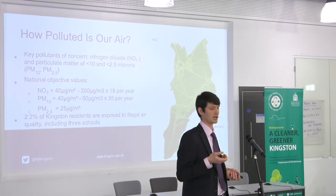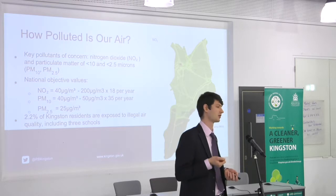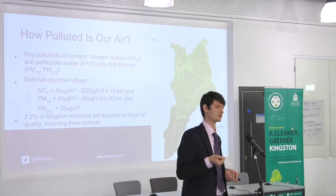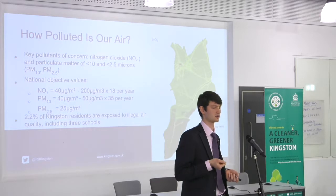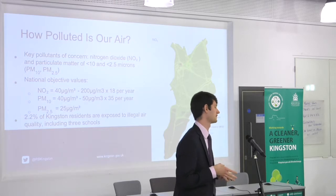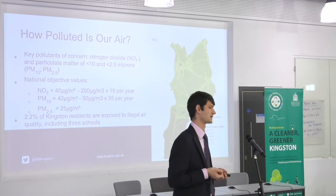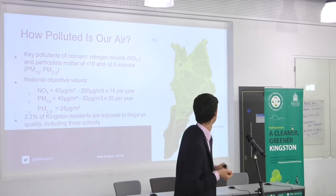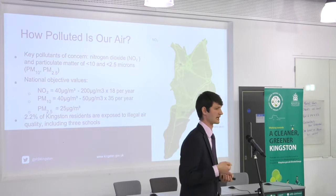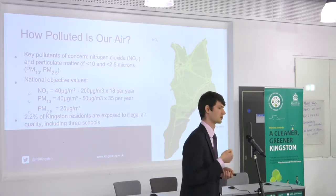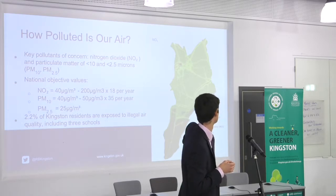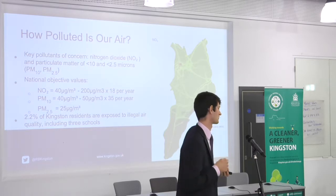The way we monitor air pollutants in Kingston is using a network of three automatic monitoring stations, measuring a range of different air pollutants and meteorological data, as well as a network of 40 nitrogen dioxide diffusion tubes. To fill in the gaps between monitoring sites, we plug that data into a model — the Greater London Authority does — and that produces the map on the right-hand side, shown here for nitrogen dioxide. Broadly speaking, the sources of nitrogen dioxide and particulate matter are roughly similar, so this can be seen as generally indicative of both pollutants' distribution.